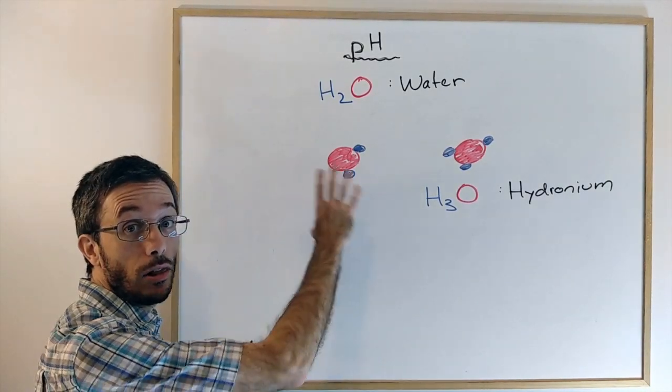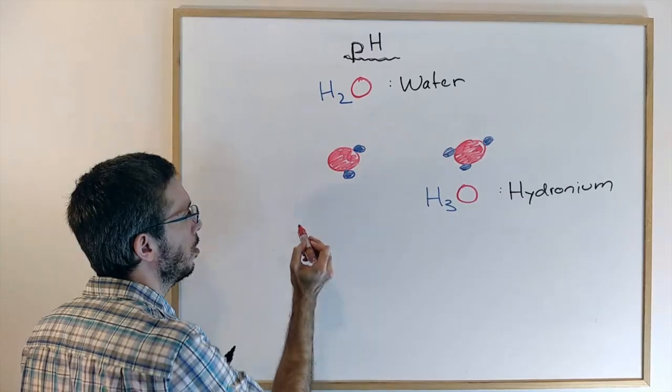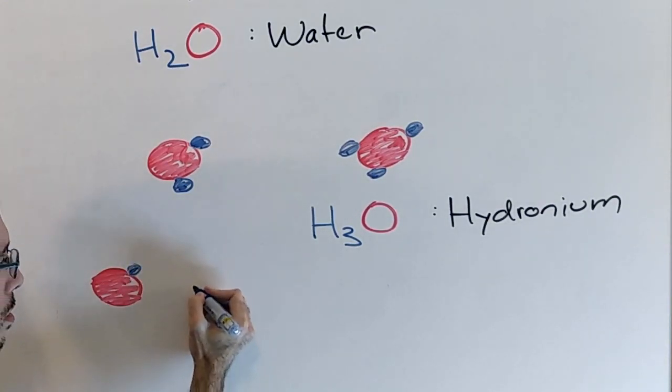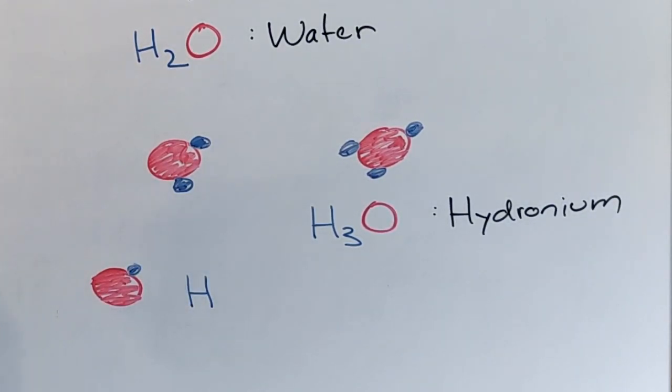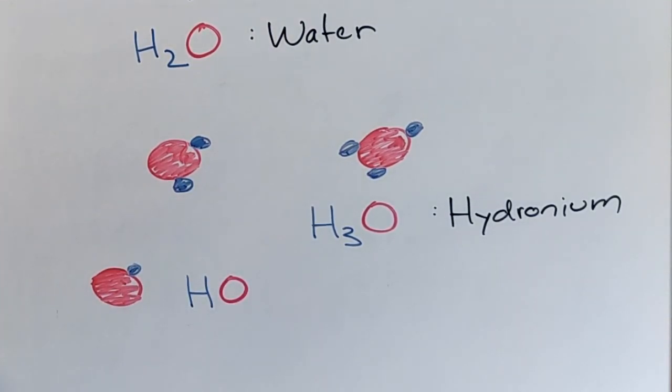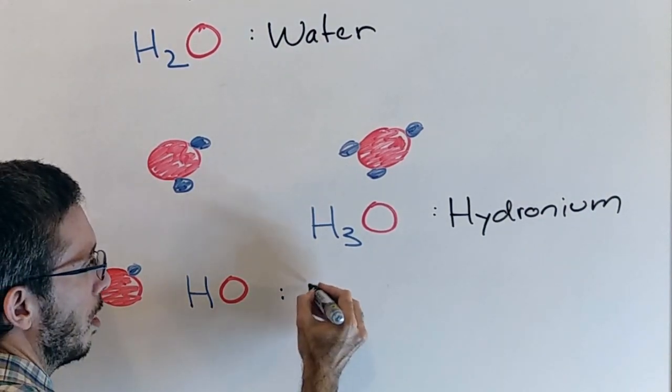Then we have another molecule that looks very similar, which is this one here. Here, one oxygen and one hydrogen. So HO, which is called hydroxide.